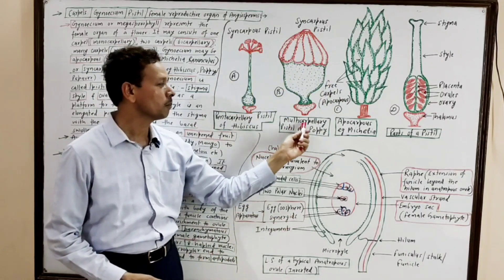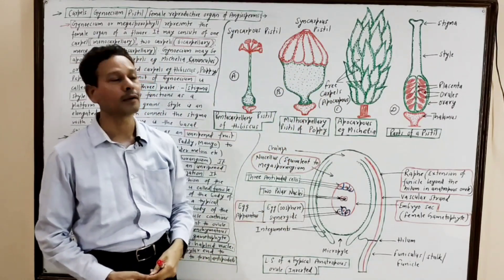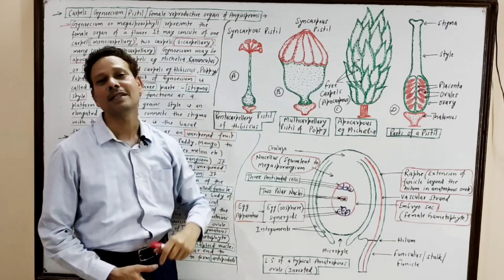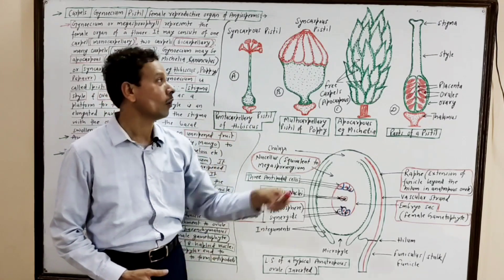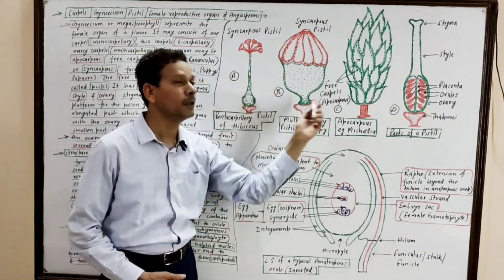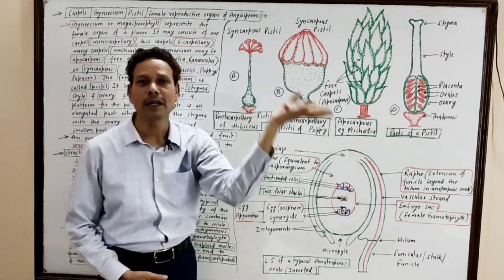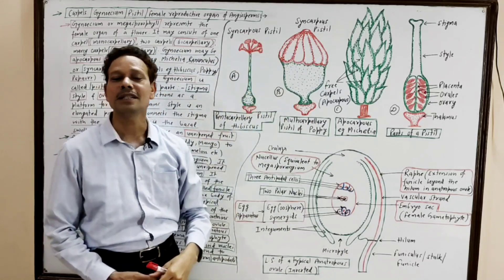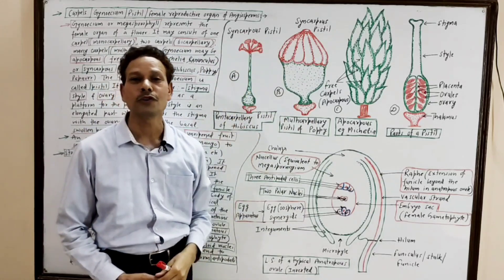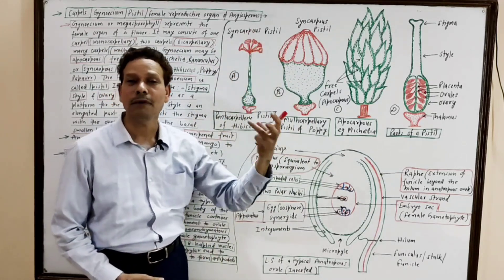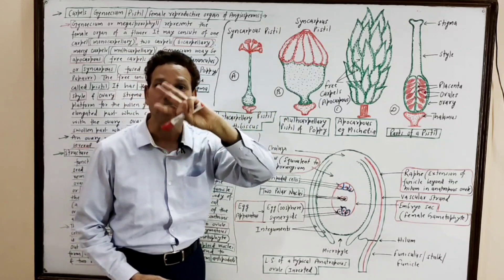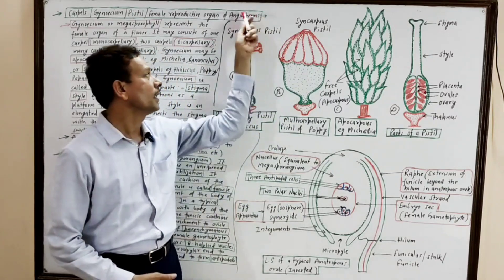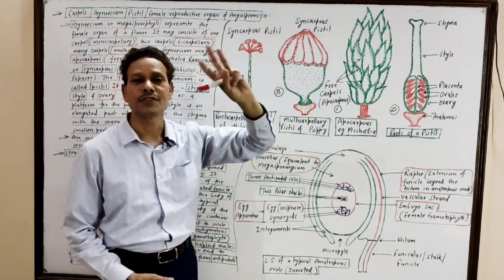But in case of poppy, Papaver somniferum, Hibiscus, and China rose, all these carpels — five carpels in case of Hibiscus and China rose, the shoe flower — all these five carpels remain fused. The condition is syncarpous.